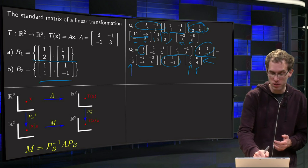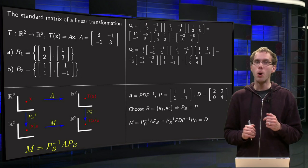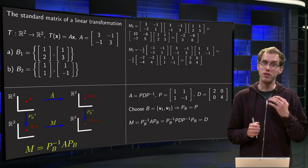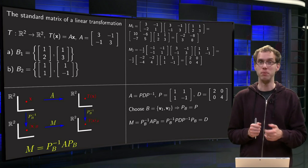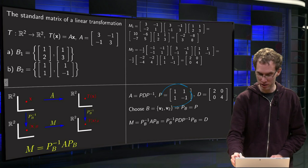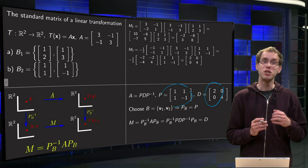But how did this happen? Well, we did a clever choice of a basis here, because we know that A is diagonalizable, A equals PDP inverse, with P and D. So what did we do?